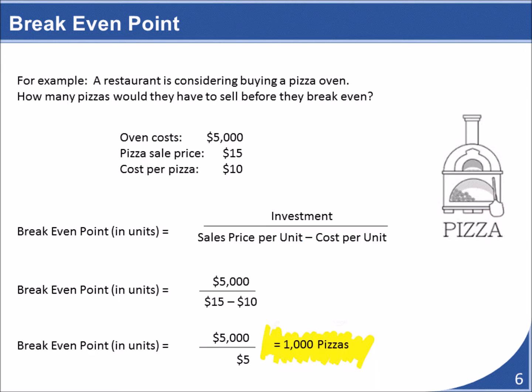Suppose a restaurant is considering buying a pizza oven and expanding their menu to include pizza. If the oven costs $5,000 and the profit per pizza is $5, how many pizzas would they have to sell before they recoup their investment? The break-even point is achieved when they sell enough pizzas to generate profit equal to the cost of the oven — in this case, 1,000 pizzas.